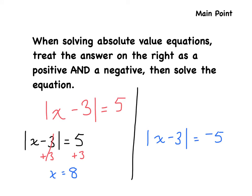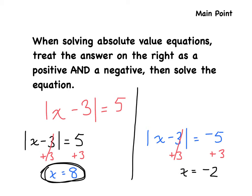For the negative side, we have x minus 3 equal to negative 5. We add 3 to both sides, giving us x is equal to negative 2. The final answer is both x equals 8 and x equals negative 2 — there will be two answers.